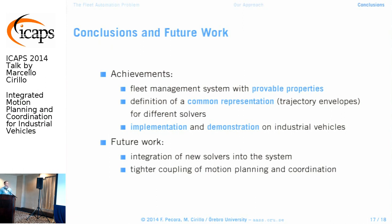To conclude, we have developed a fleet management system with provable properties. We defined a common representation — trajectory envelopes — for different solvers, and implemented and demonstrated all the components on industrial vehicles, though task allocation is still done in a fairly simple way. As future work, we would like to integrate new solvers such as more complex task allocation, and explore tighter coupling of motion planning and coordination beyond the current on-demand approach.